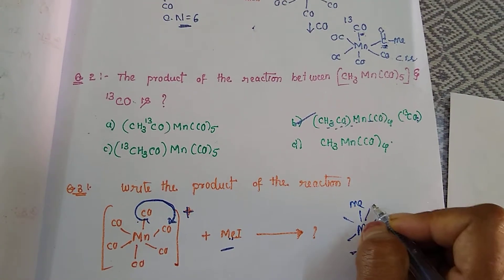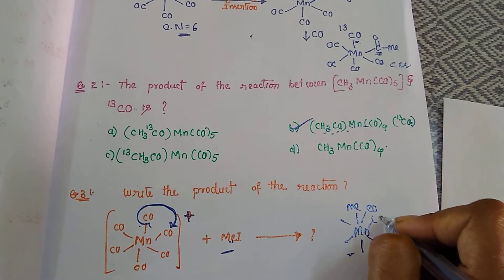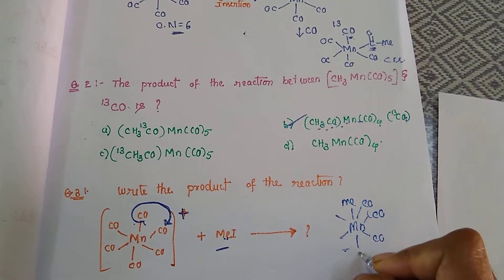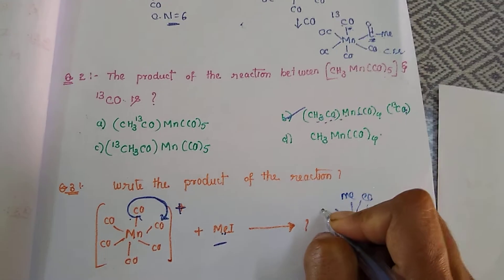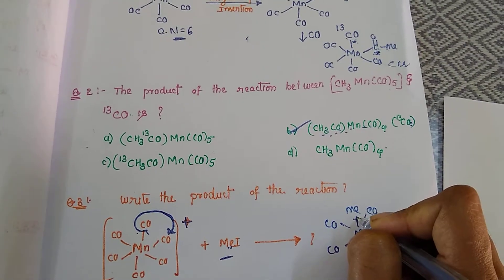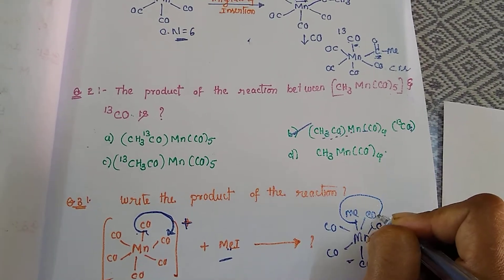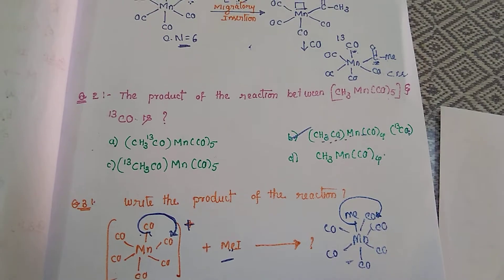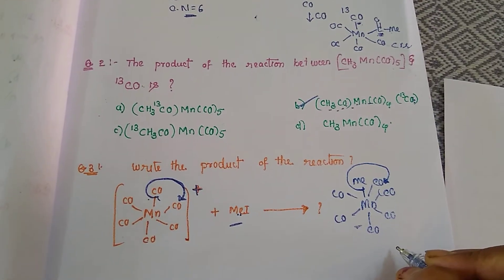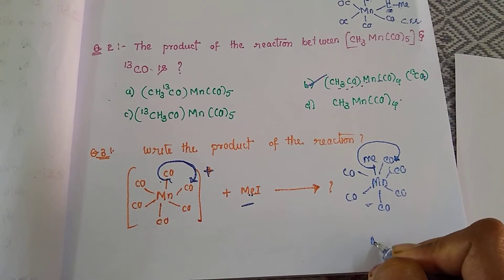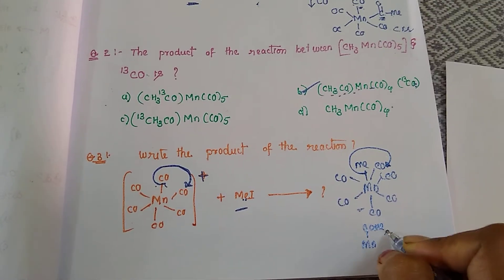So the coordination number is going to exceed from 6 to 7 and the compound is becoming coordinatively unsaturated. In that process it immediately undergoes migration and forms CO-ME.